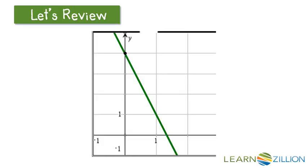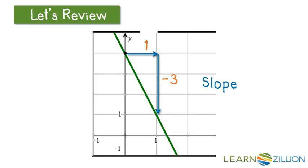To review, remember the slope is the rate of change. The rate of change is the change in y divided by the change in x. We see here the change in x is 1 and the change in y is negative 3, so when we divide negative 3 by 1, we have a slope of negative 3.